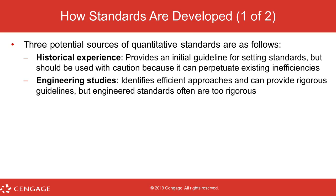We know that the price of materials fluctuates, and even the amount of material you're going to need to make a product could fluctuate over time. So in creating these standards or estimates, you need quantitative data to support your quantity and price estimates. Some potential sources are from historical experience. If you've been in the business for a number of years and you know historically how much material it takes to make a unit, and pricing is somewhat stable, you can use that historical average as your standard cost per unit.